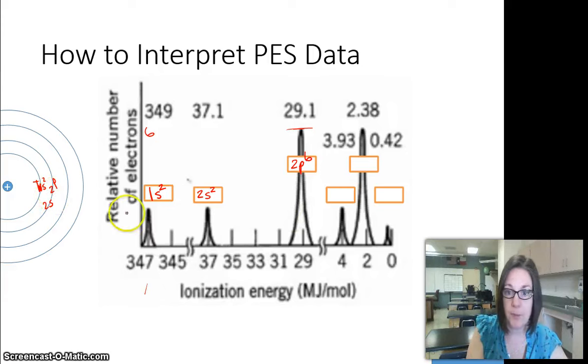After we've gone to 2P, we're going to go out to the third energy level. Same height as before, so that's two electrons on the third energy level, and it would be the S-sublevel. This is the same height as this one, so that's a P6, and that's going to be on the third energy level, so 3S and then 3P.